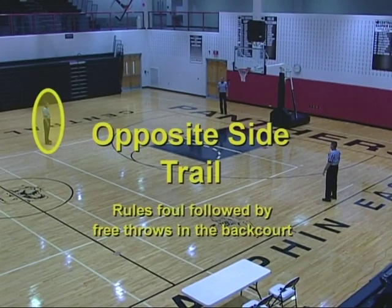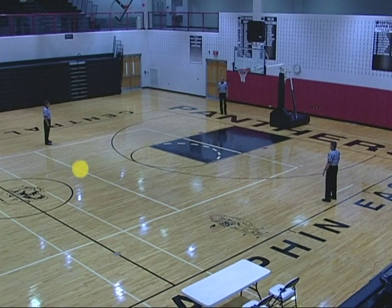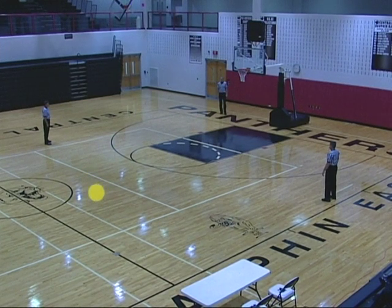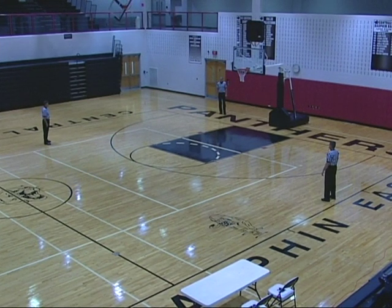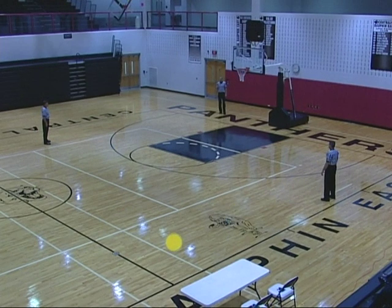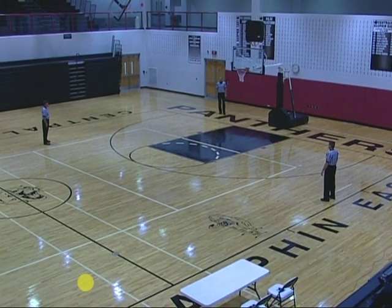Opposite side trail rules foul, followed by free throws in the backcourt. Proceeds to the reporting area, reports the foul, and becomes opposite side center. Table side center becomes table side lead and handles the free throws.